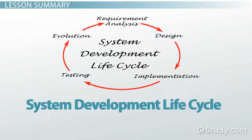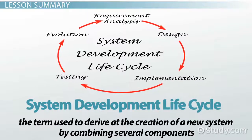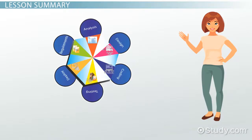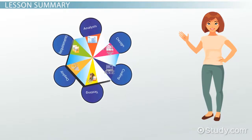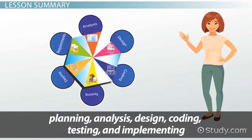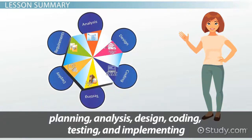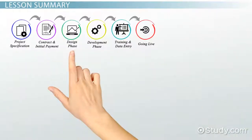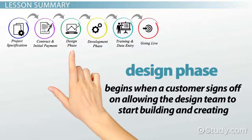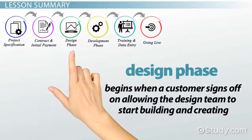System Development Lifecycle is the term used to arrive at the creation of a new system by combining several components. The SDLC has six phases: Planning, Analyzing, Designing, Coding, Testing, and Implementing. The third phase is known as the Design Phase, and it begins when a customer signs off on allowing the design team to start building and creating.